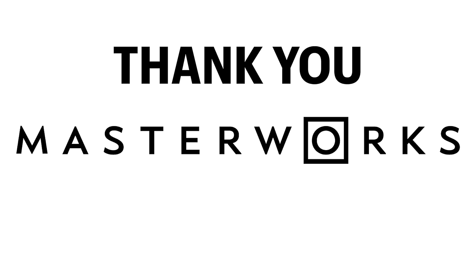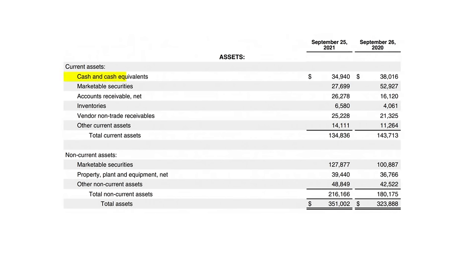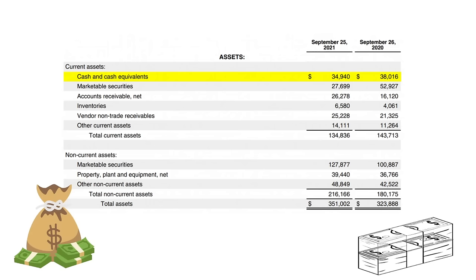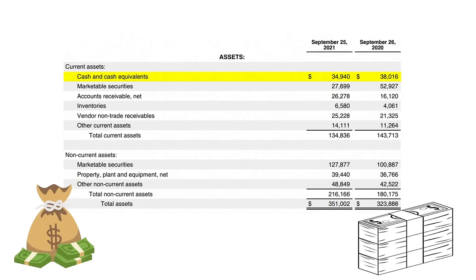Now back to Apple's balance sheet. The first line I want to talk about is cash and cash equivalents. Cash is just the money sitting in a checking or savings account. Cash equivalents are short-term and super safe investments that can easily be turned into cash. The reason companies put their money into these is to earn a little extra money. If you're Apple and you have tens of billions of dollars of cash, even a very small return generates millions of dollars of extra cash.